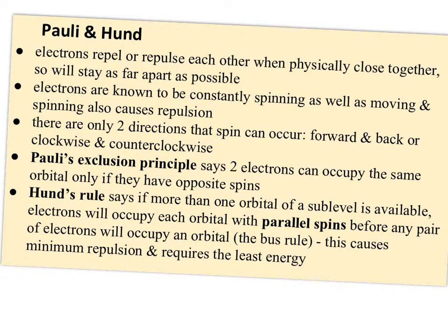Pauli and Hund then came in to explain how these orbitals fill up and why there's only two electrons in the orbitals maximum. And it's all based on this idea that electrons repel or repulse each other when they're physically close together. So they're going to stay as far apart as possible. But electrons are also known to be constantly spinning as well as moving around randomly. And the spinning also causes repulsion. So there are only two directions that spin can occur. You can think of it as forward and backwards or top spin and back spin or clockwise and counterclockwise. And Pauli's exclusion principle says two electrons can occupy the same orbital only if they have opposite spins.